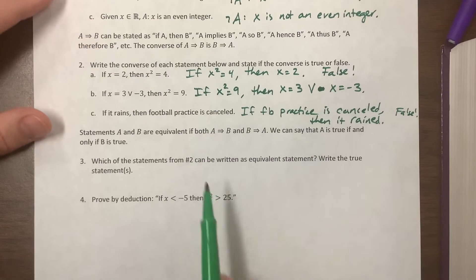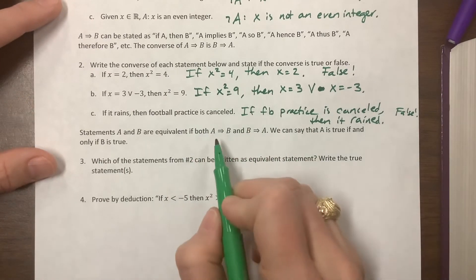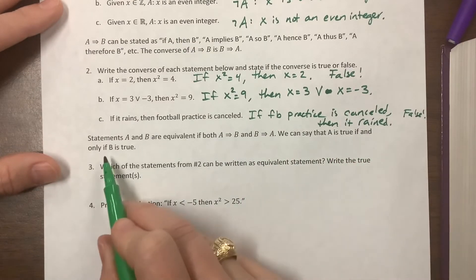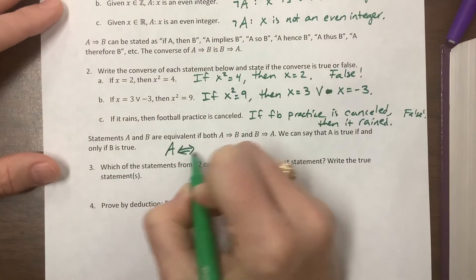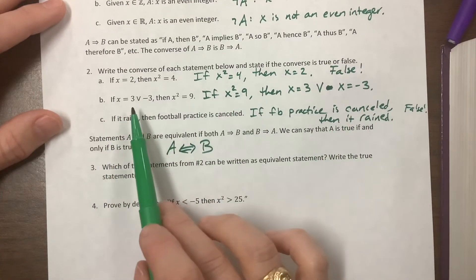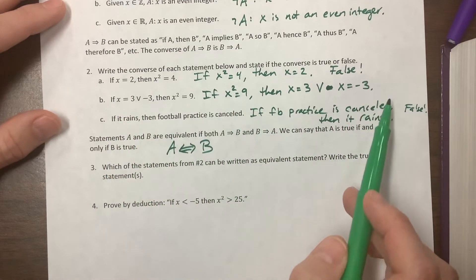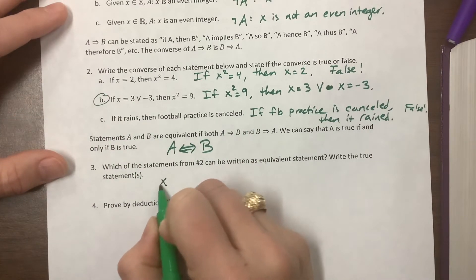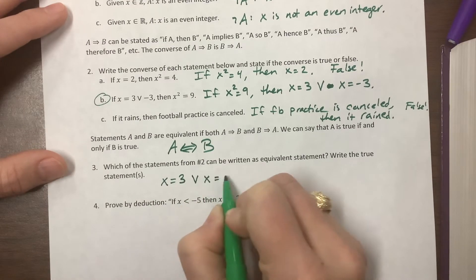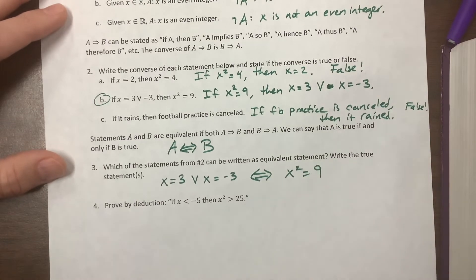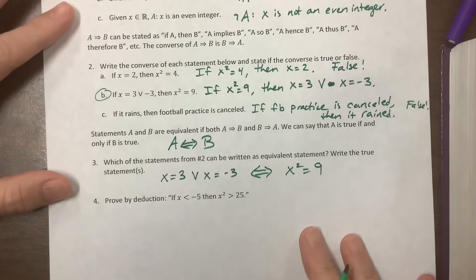Statements A and B are equivalent if both 'A implies B' and 'B implies A.' So if a statement and its converse are both true, we can say 'A is true if and only if B is true,' which we write as 'A if and only if B.' The only one where the statement and its converse were both true was part B. So the true statement is: x = 3 or x = -3 if and only if x² = 9.